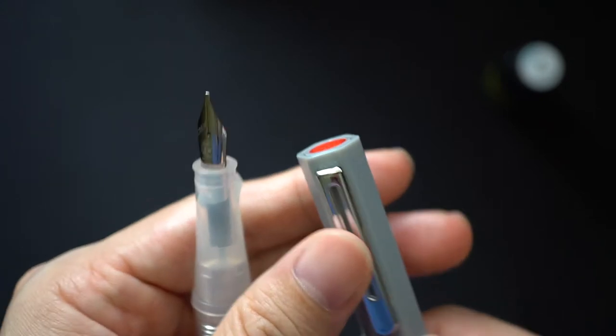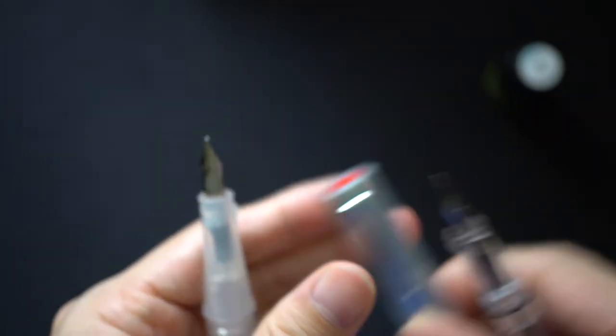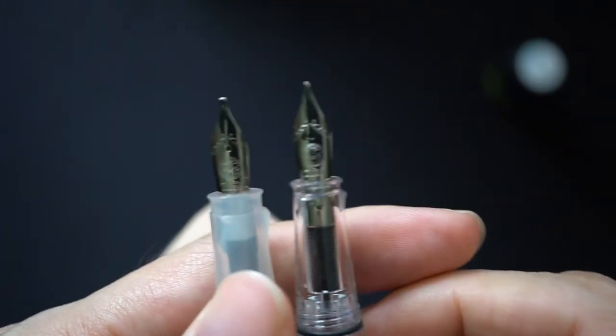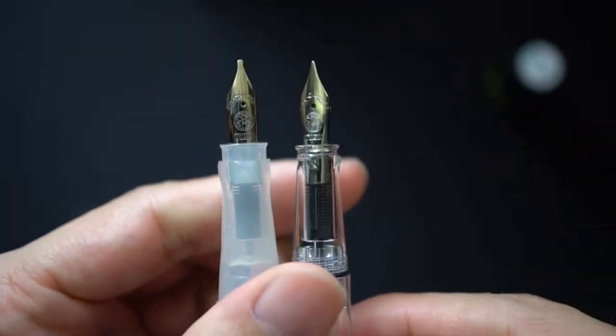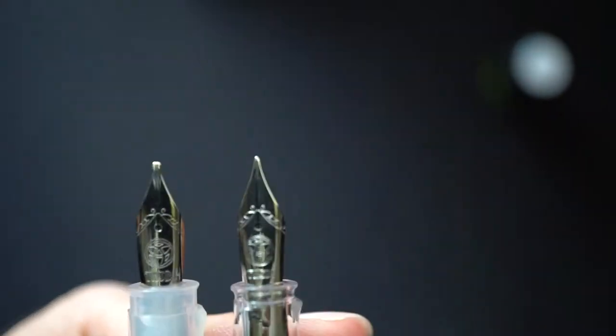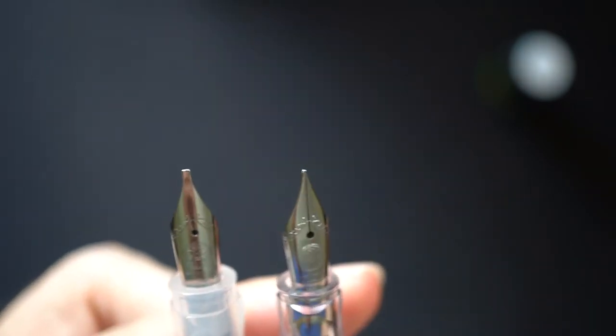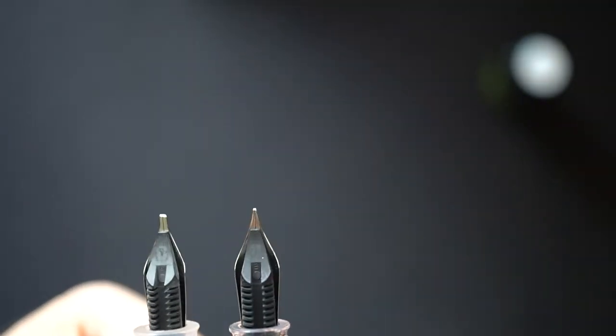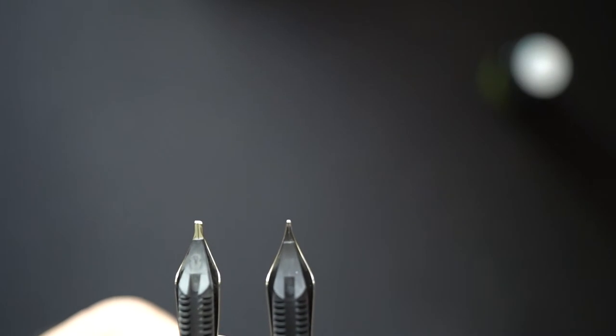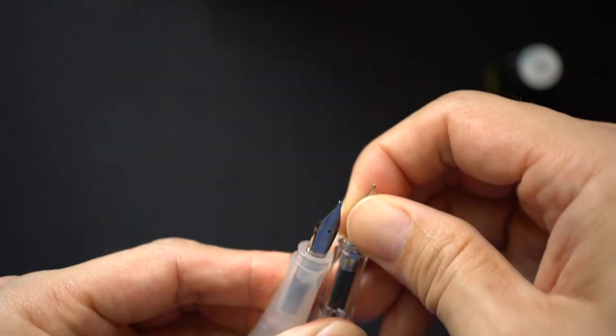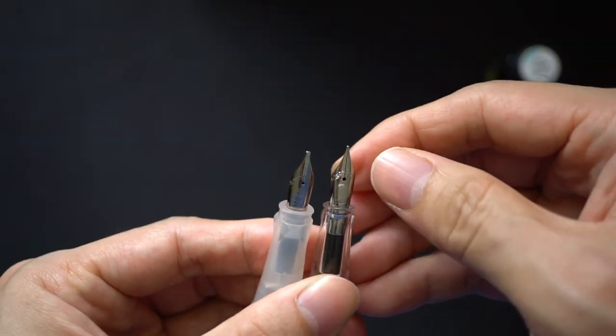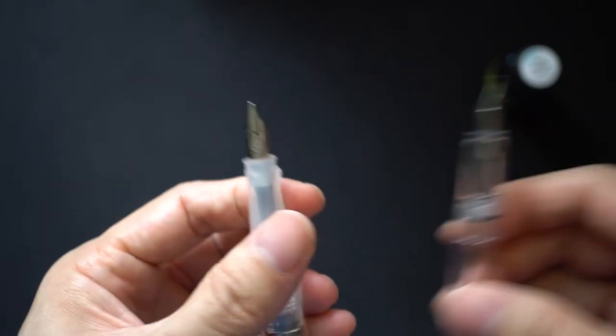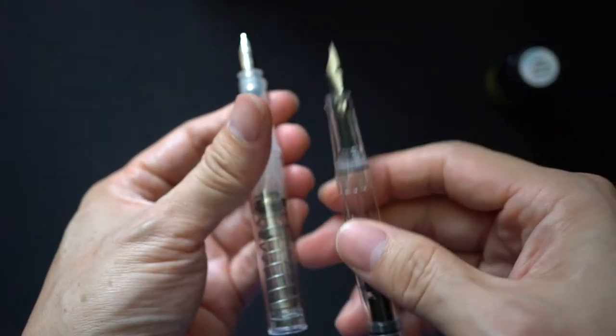Comparing this nib with another pen which I have from TWSBI, which was actually the Eco. So this is the Eco in cement gray. You can tell that the nibs look pretty identical. So you can definitely swap out, you can actually just pull out the feed and the nib unit and then swap out between the Eco and the Go.